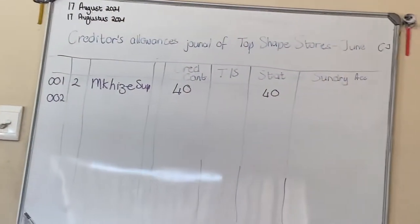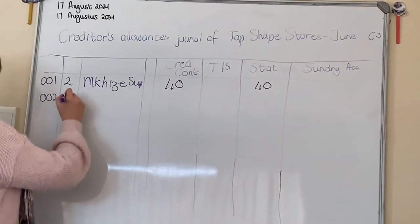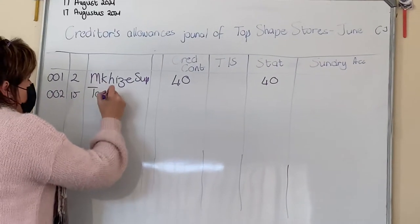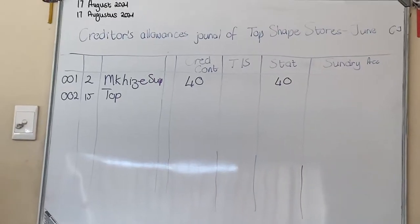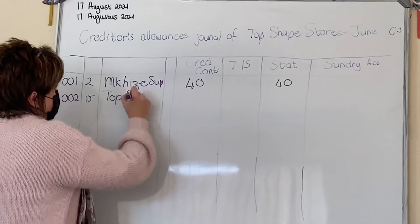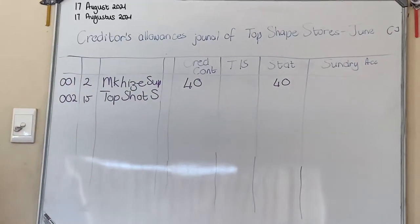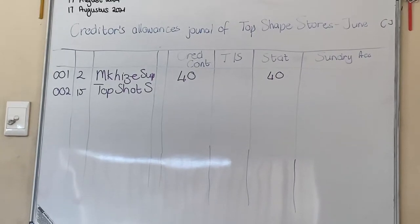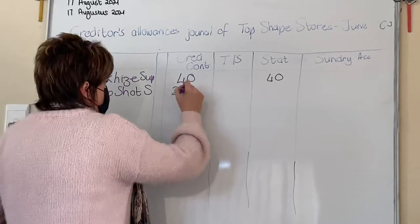This transaction happens on the 15th. We're sending it back to Top Shop Stores. The amount is 260 rand, and it was goods - that's the same as trading stock.